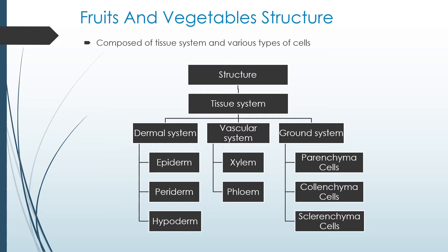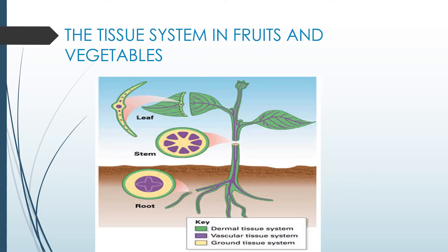The structure of the tissue system can be divided into three different systems: the dermal system, the vascular system, and the ground system. The dermal system includes the epidermis, periderm, and hypoderm, while the vascular system has xylem and phloem. Parenchyma cells, collenchyma cells, and sclerenchyma cells are included in the ground system.